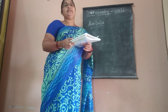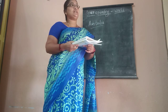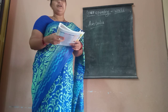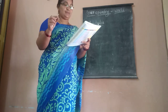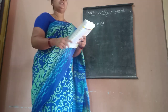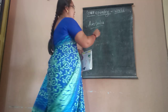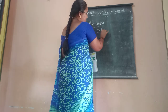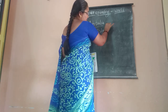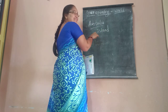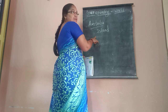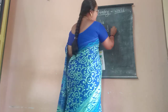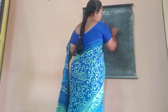Australia is the smallest continent in the world. It is also known as the island continent. Australia is the smallest continent in the world and it is also called the island continent.